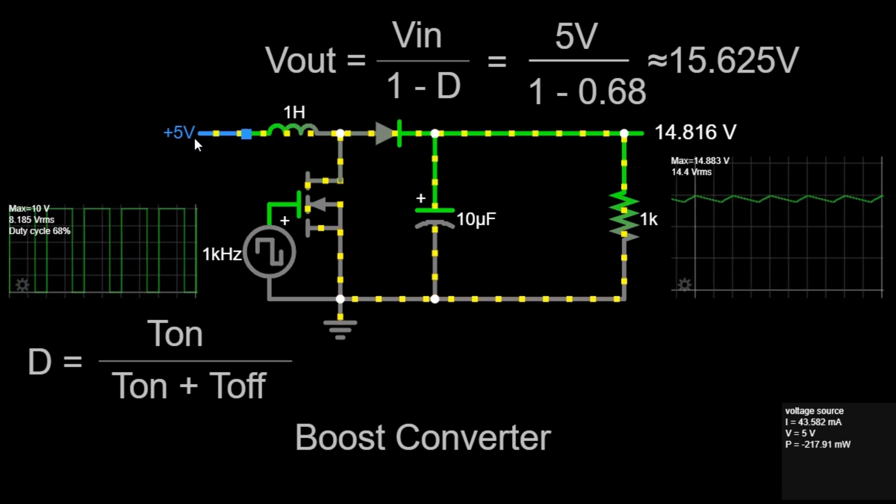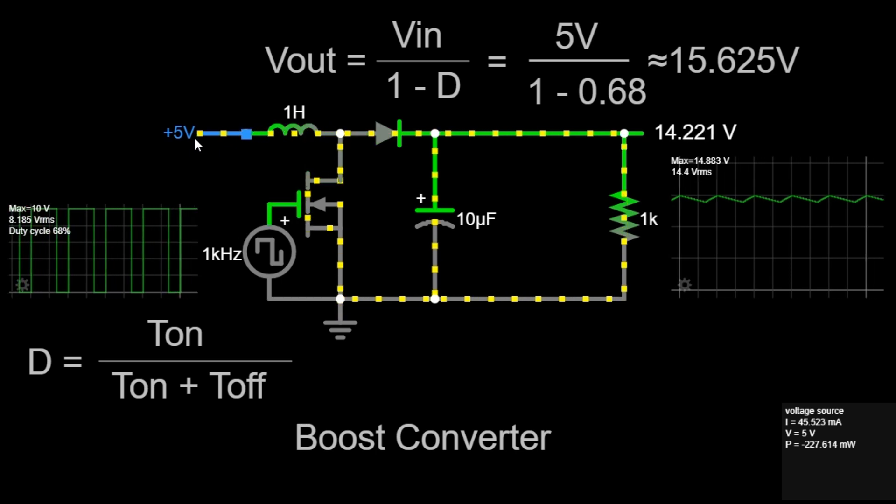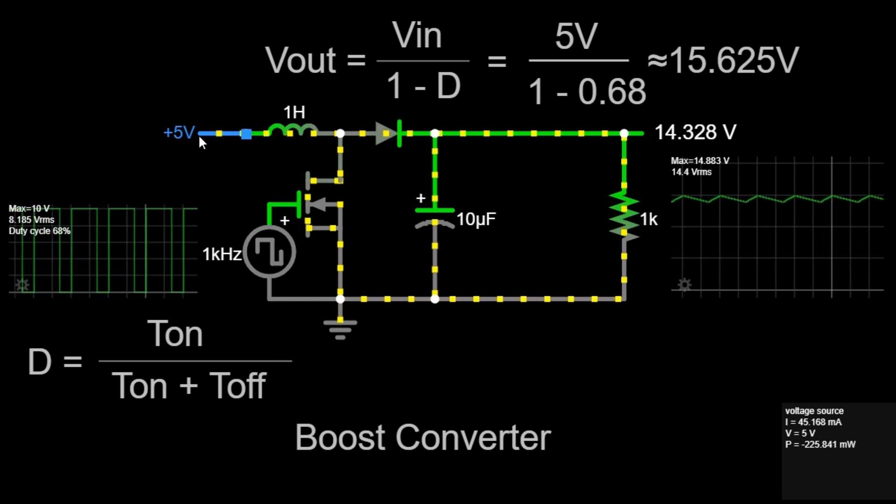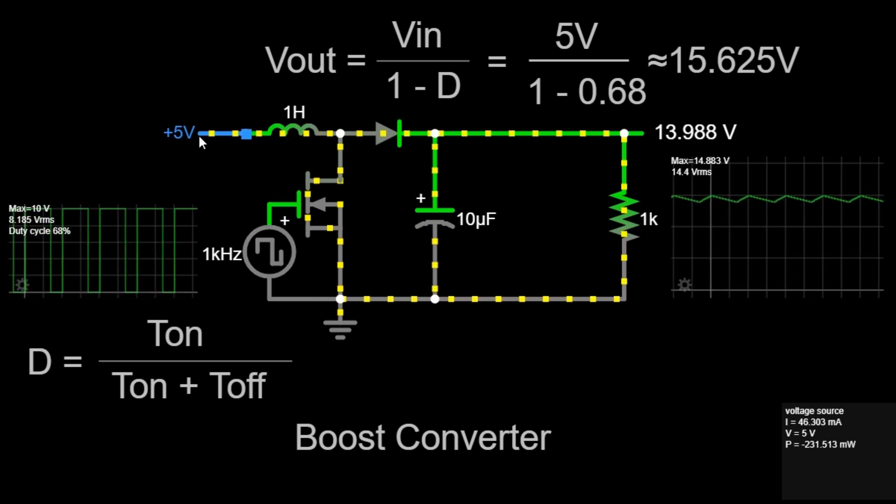The input voltage is the initial power provided to the Boost Converter. In real-world applications, this could be a battery, a solar panel, or any other DC power source.